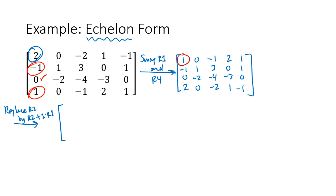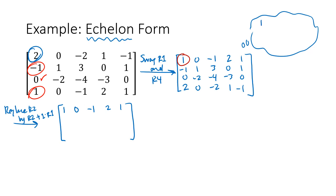Row 1 stays 1, 0, −1, 2, 1. For row 2, I'm adding row 1 (1, 0, −1, 2, 1) to row 2 (−1, 1, 3, 0, 1). My new row 2 is 0, 1, 2, 2, 2. Row 3 already has a 0 in column 1, so I don't need to change it — it stays 0, −2, −4, −3, 0.